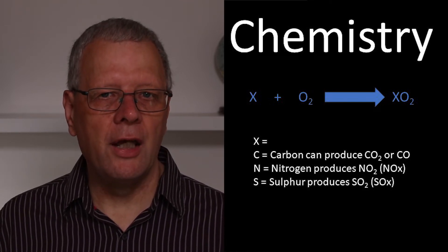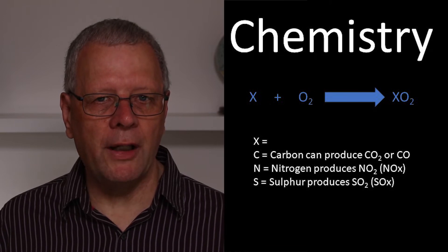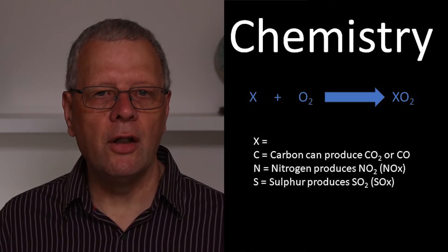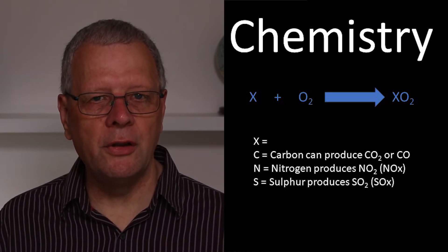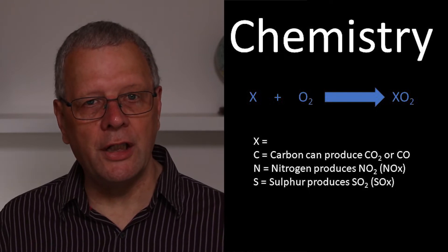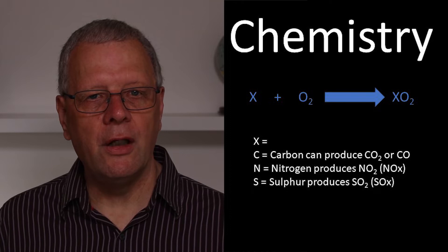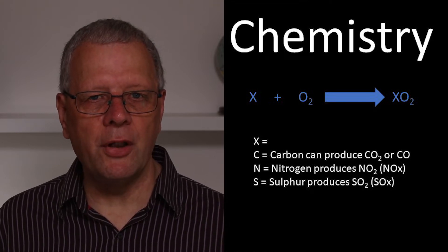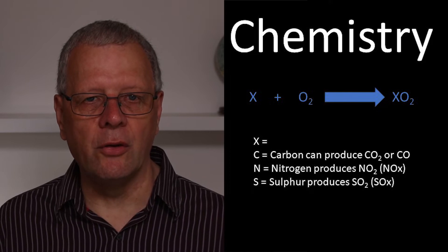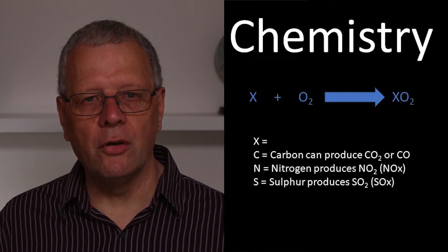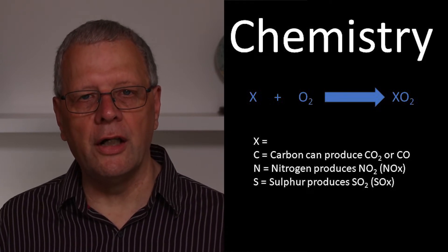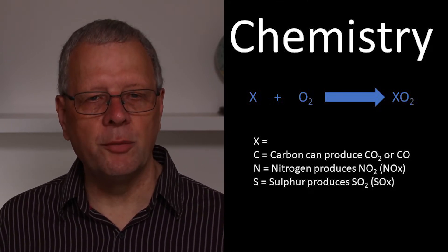If we burn a carbon-based fuel like natural gas or coal, we will generate carbon dioxide, or in the absence of sufficient oxygen, carbon monoxide. If we also have other impurities like nitrogen or sulphur present in the fuels, that will cause nitrous oxides (NOx) or sulphur dioxide (SOx) to be produced.